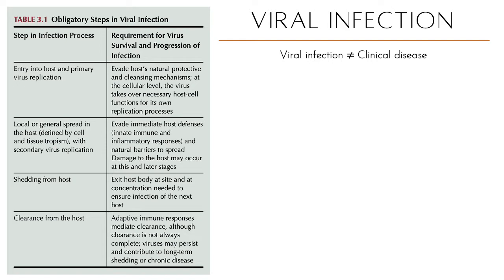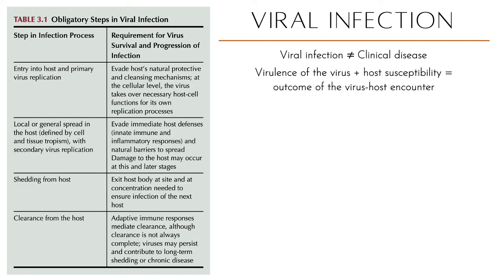The outcome of the virus-host encounter is decided by the virulence of the virus and how susceptible the host is. Pathogenicity is the ability to cause disease, while virulence is the degree of pathogenicity — a quantitative or relative measure of the ability of the virus to cause disease.